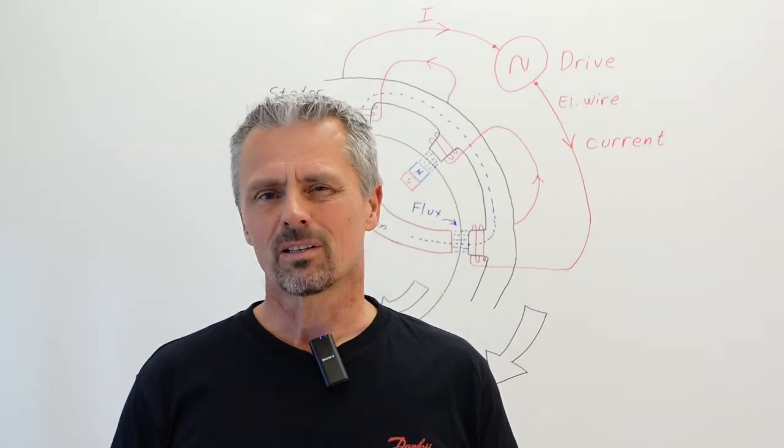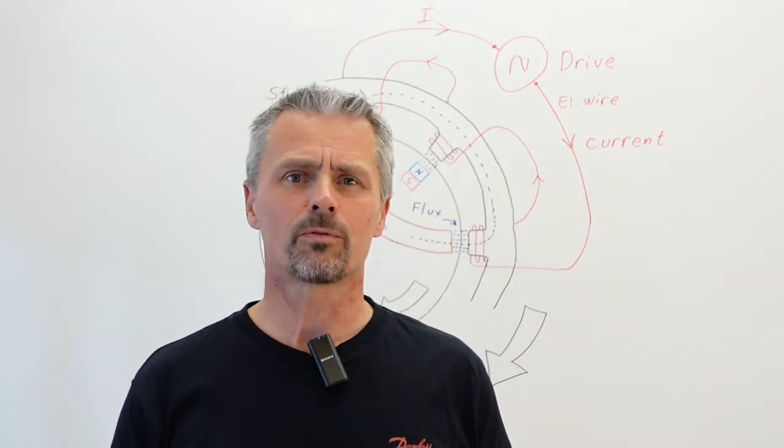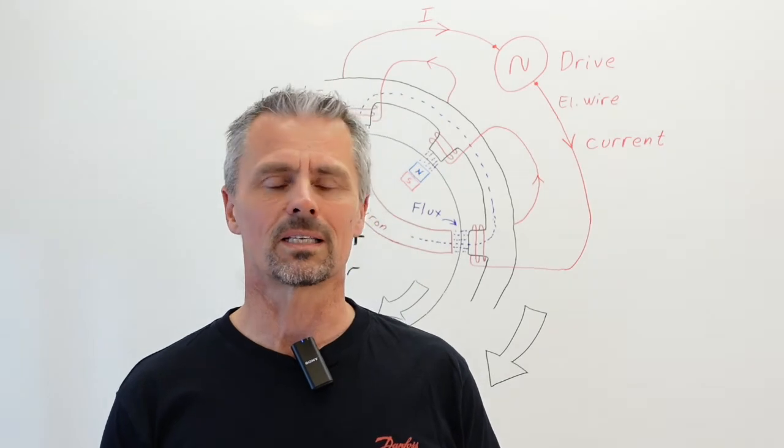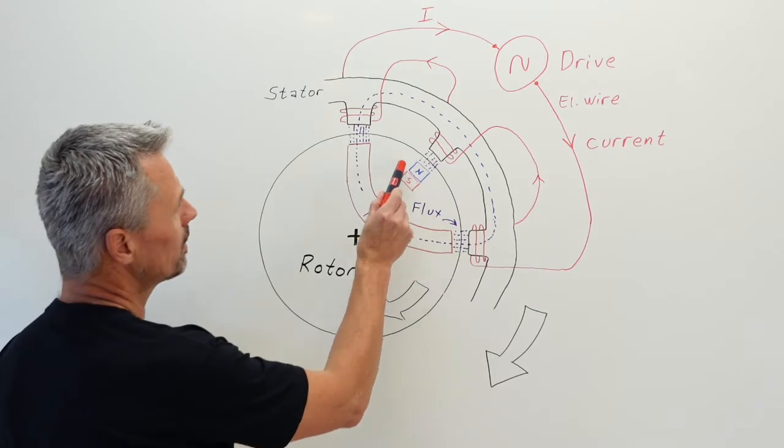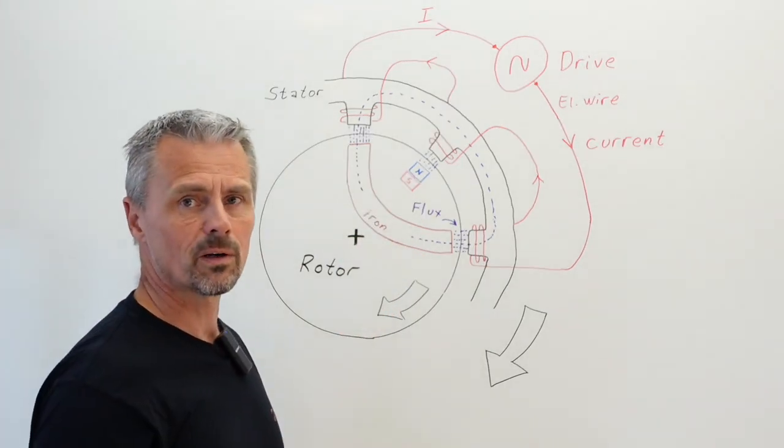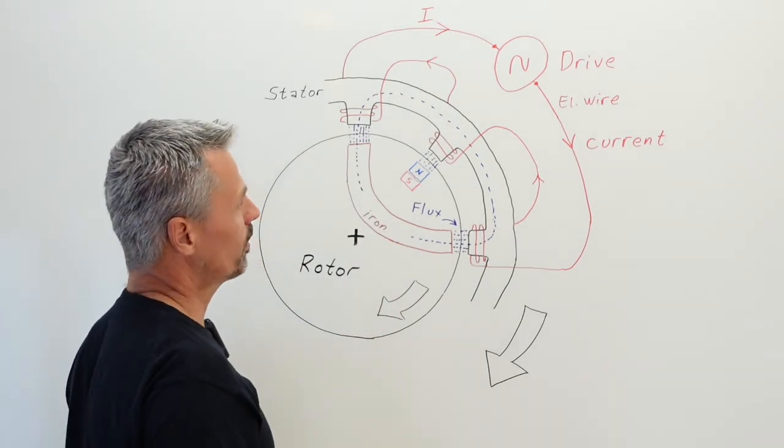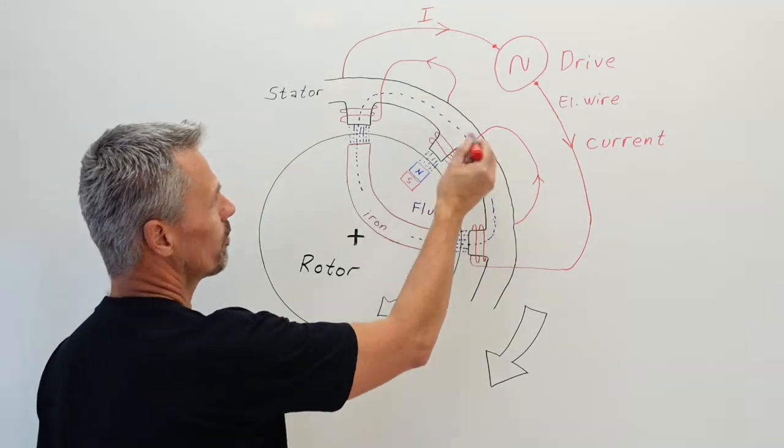This part of the name - reluctance - where does it come from? It comes from how the rotor is designed. If you look into the rotor, it has got the permanent magnet here with all the characteristics that we learned of permanent magnet motor. We have the back EMF and everything, you can do the ID runs and so on.